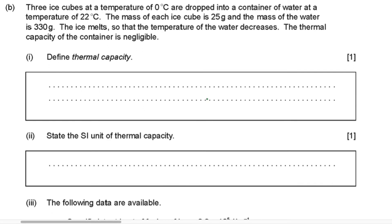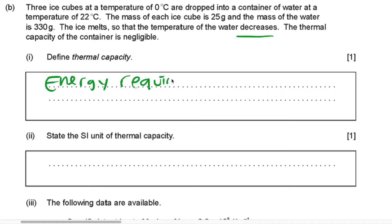Three ice cubes at a temperature of 0°C are dropped into a container of water at 22°C. The mass of each ice cube is 25 grams and the mass of the water is 330 grams. The ice melts, so the temperature of the water decreases. The thermal capacity of the container is negligible. Define thermal capacity: it is the energy required to raise temperature by 1 Kelvin.